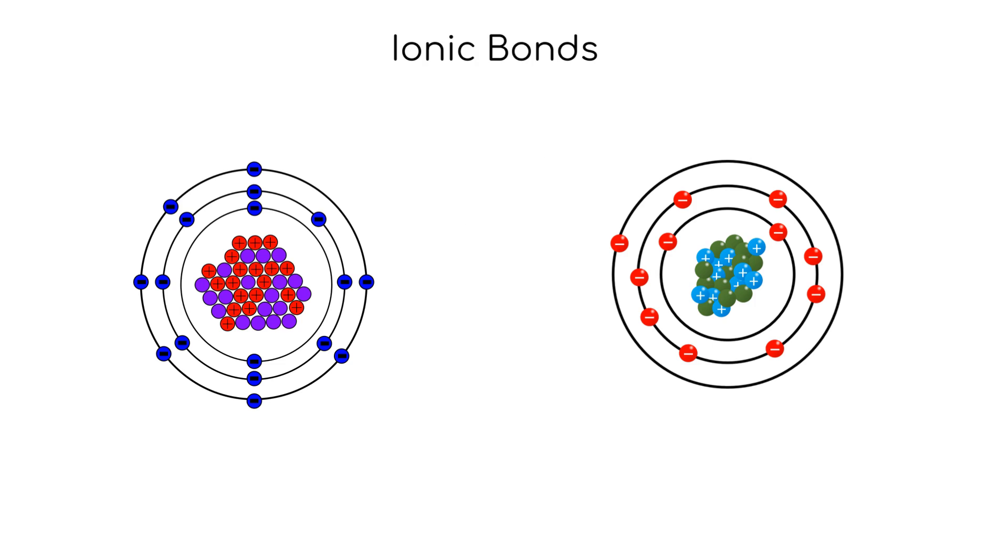Atoms with opposite charges can form ionic bonds. In ionic bonds, electrons are exchanged between atoms. For example, in table salt, sodium chloride, sodium loses an electron while chlorine picks it up.